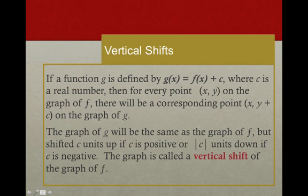If we have a vertical shift, what you're going to see is that we get a plus or minus a number on the outside of the function. And so if it's plus c, then we're moving up c units. So here, shifted c units up if c is positive.